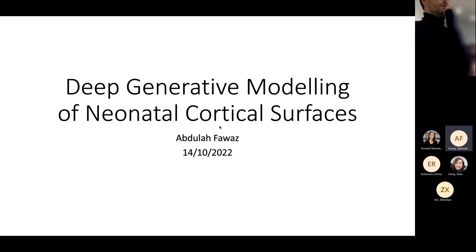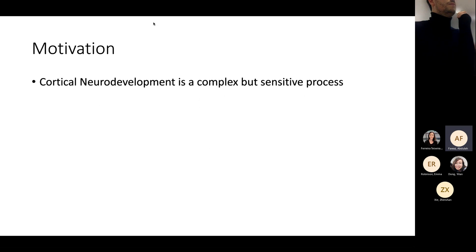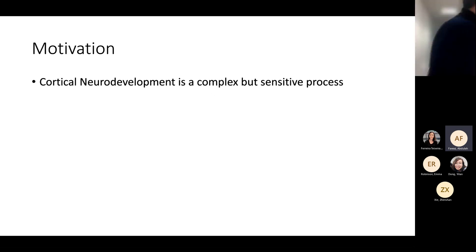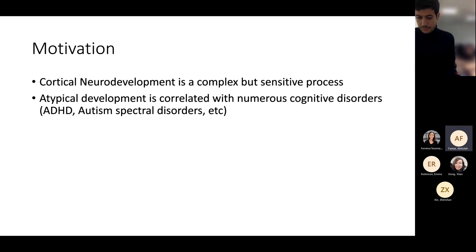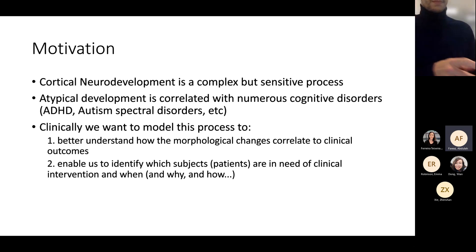I'm going to be talking about the latest stuff I've been doing, which is deep generative modeling of neonatal cortical surfaces. The start is: why do you care about this? Neurodevelopment is really complex and sensitive — so much is happening. Anything that disrupts that process or means it's altered can result in cognitive disorders like ADHD, autism spectrum disorders. We don't really understand how this happens, but we know there is a correlation there.